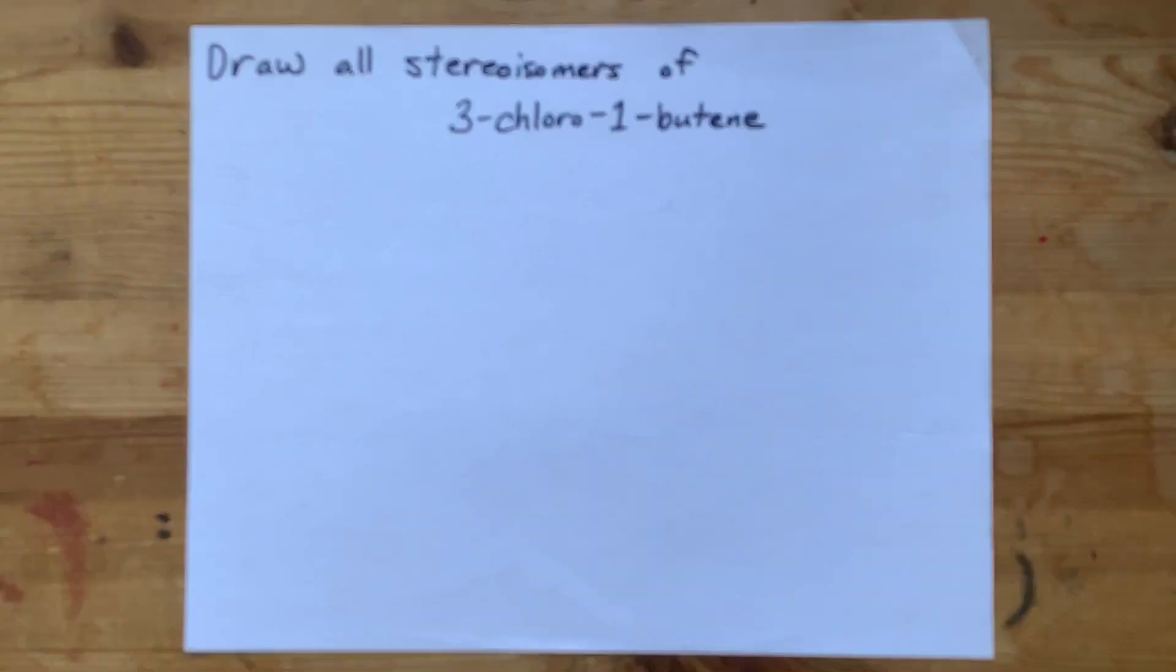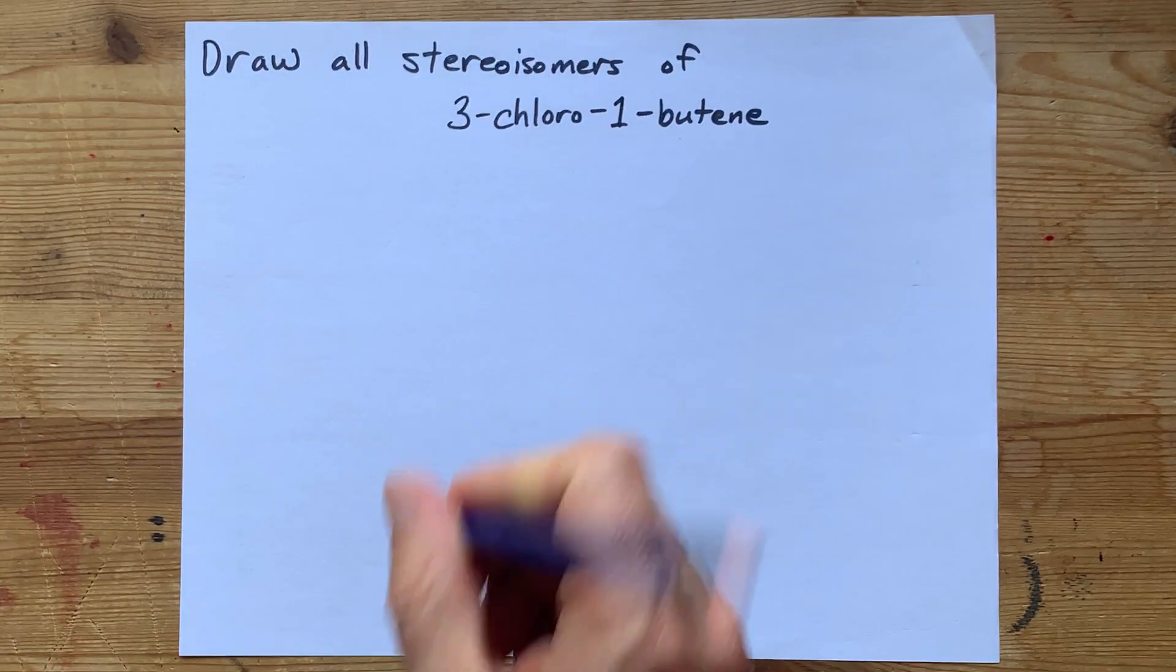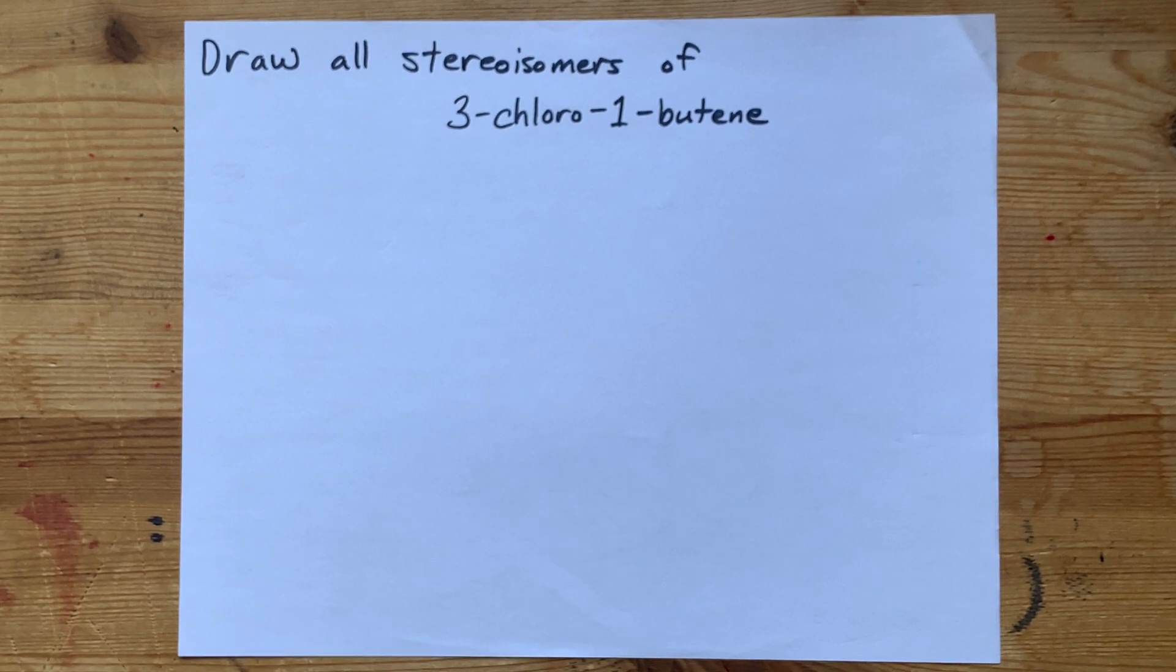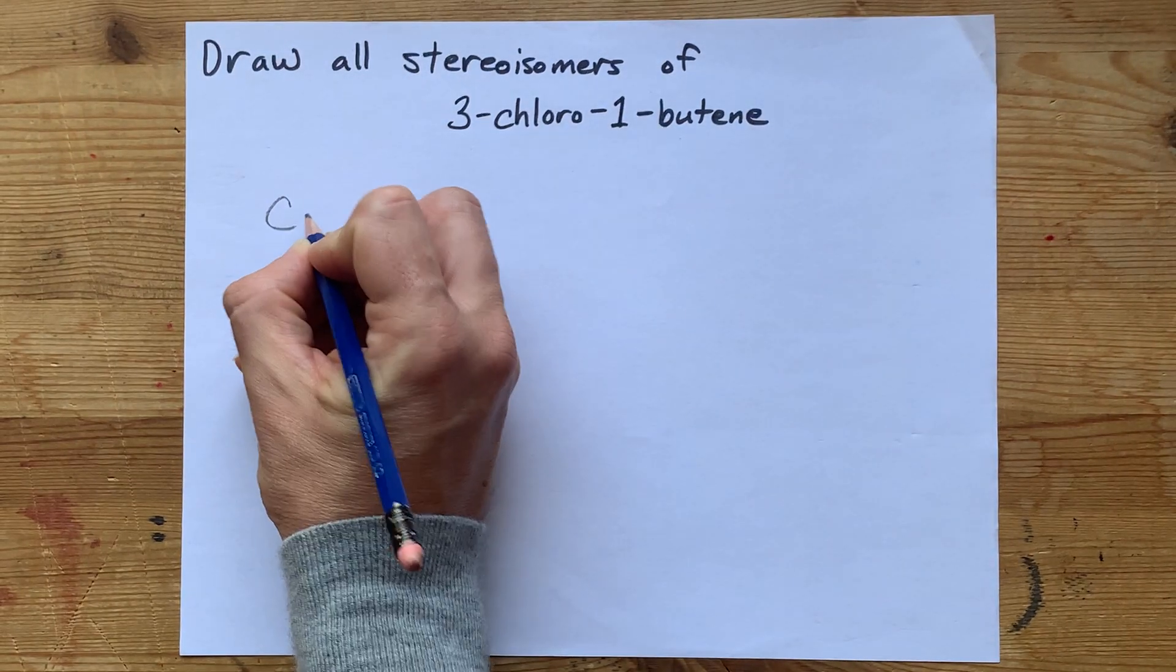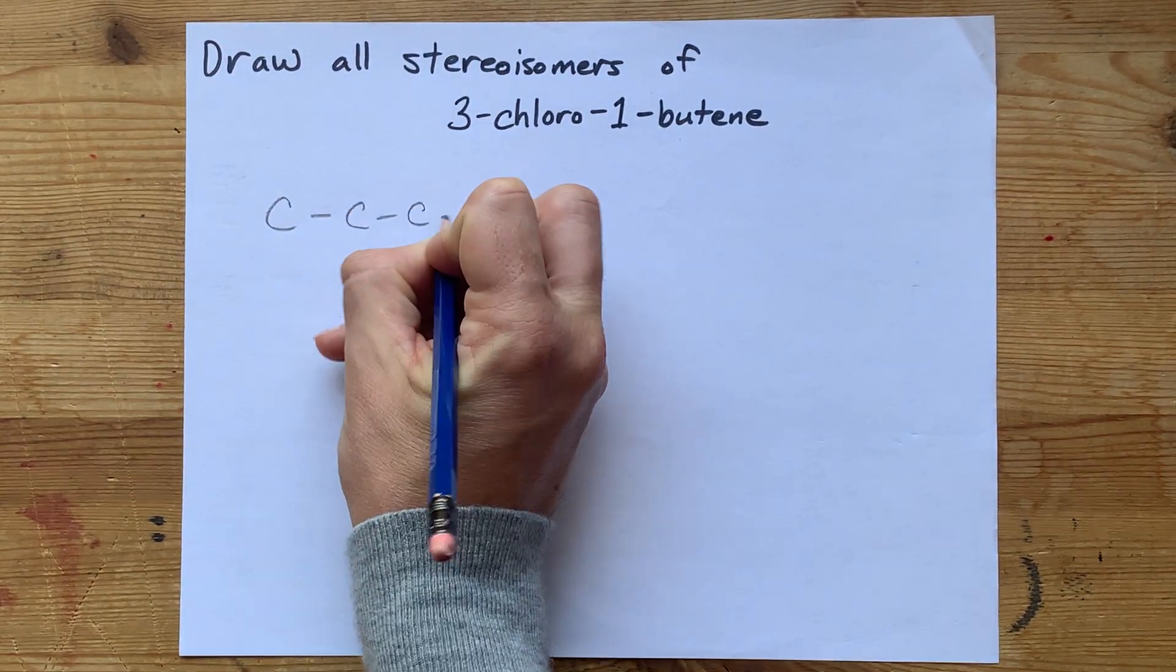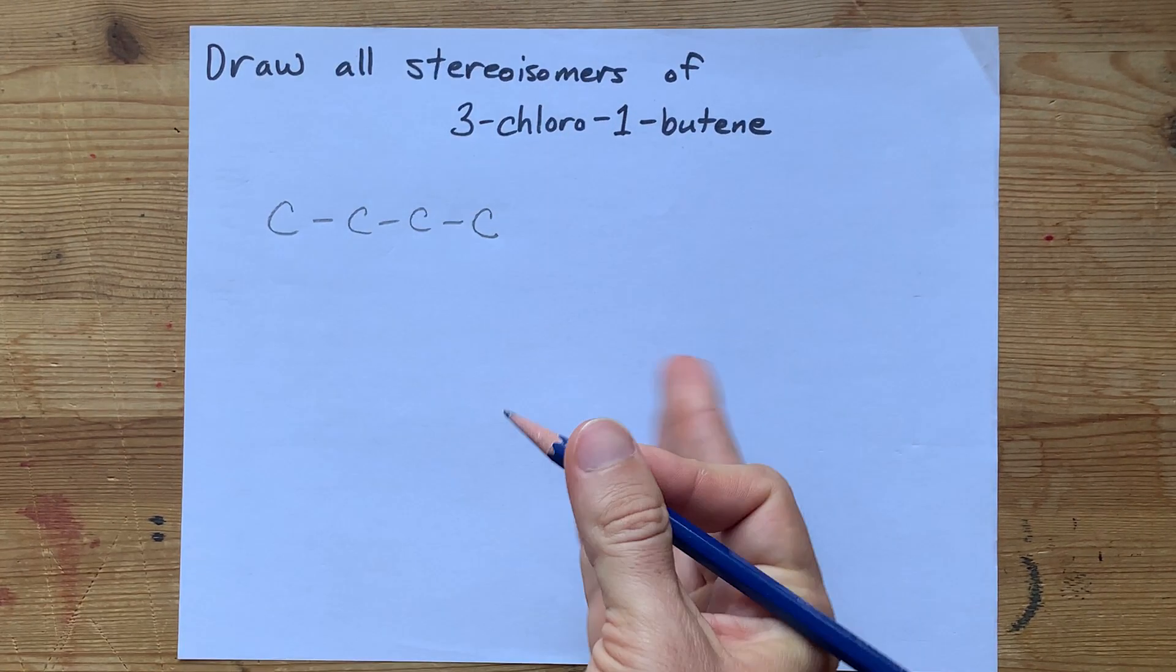I was asked to draw the stereoisomers of 3-chloro-1-butene. I'm going to start by just drawing the butene for myself, so I get a feel for what this question is even asking.